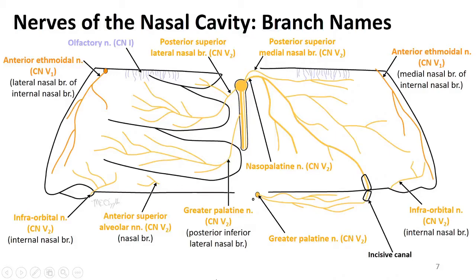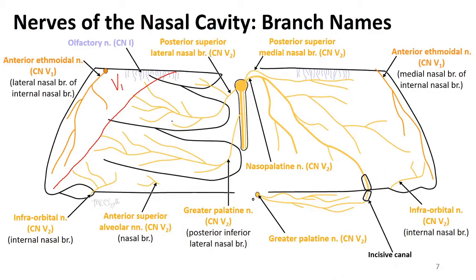One of the biggest takeaways for the innervation of the nasal cavity is to think of a line running obliquely, separating the innervation of V1 from V2. That will be true both on the septum and on the lateral wall — V1 anterosuperiorly and V2 posteroinferiorly.